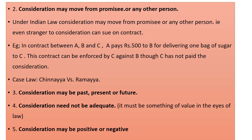In a contract between A, B, and C, A pays Rs. 500 to B for delivering one bag of sugar to C. This contract can be enforced by C against B, even though C has not paid the consideration. So in this contract, C is the stranger to consideration — C is not giving anything. Even though he is a stranger to consideration, as he is a party to the contract, he can enforce the contract.